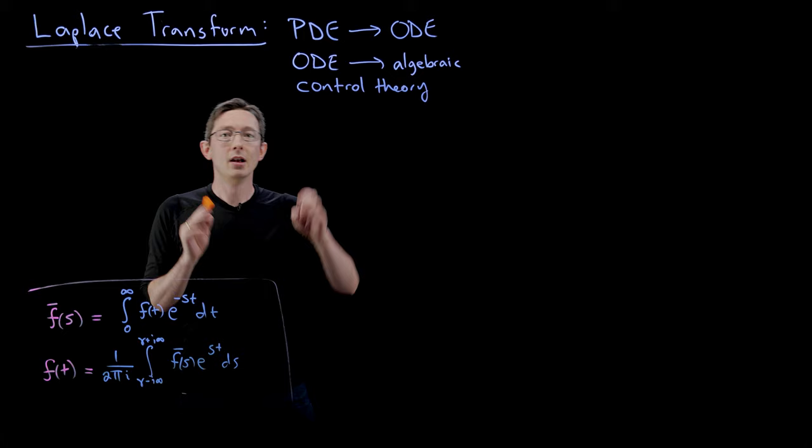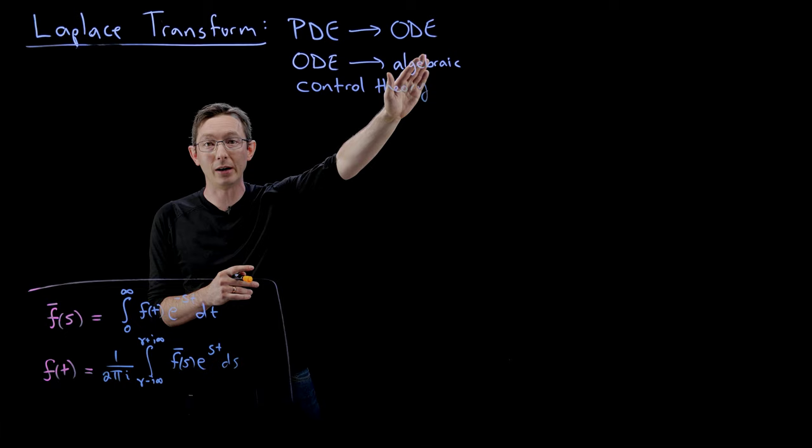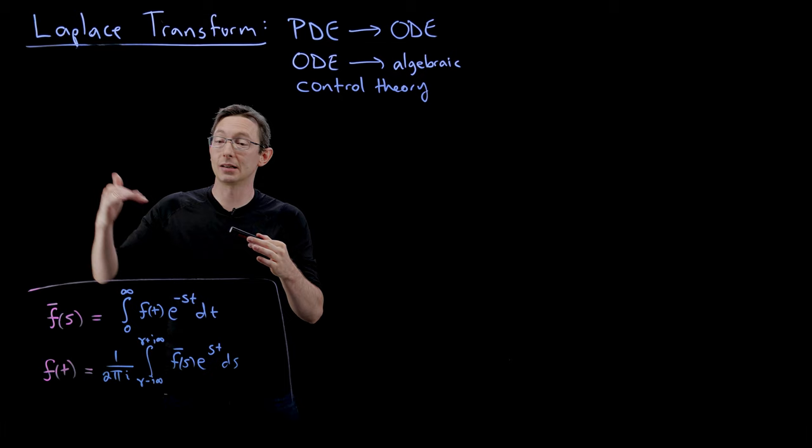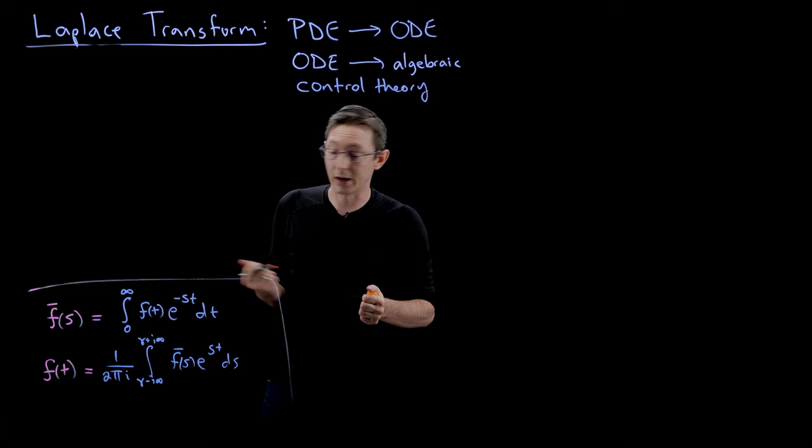I mentioned before that we can turn PDEs into ODEs, ODEs into algebraic equations, and it's useful in control theory. Right now I'm going to walk you through how to compute the Laplace transform of certain types of functions and give you some examples.